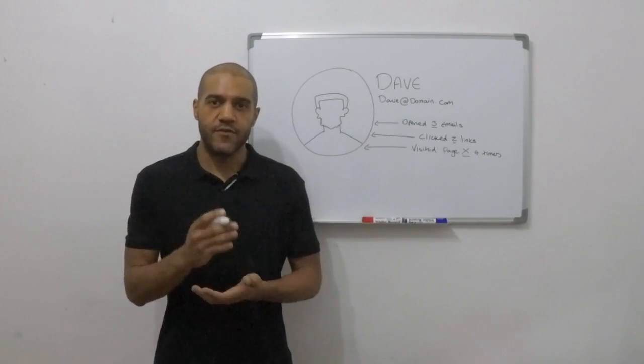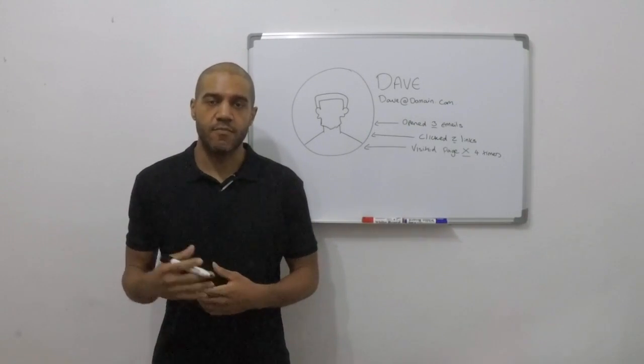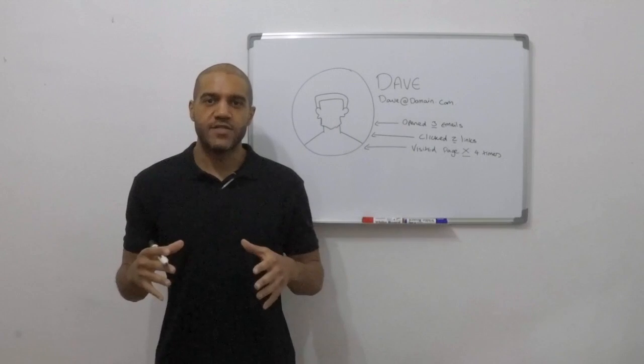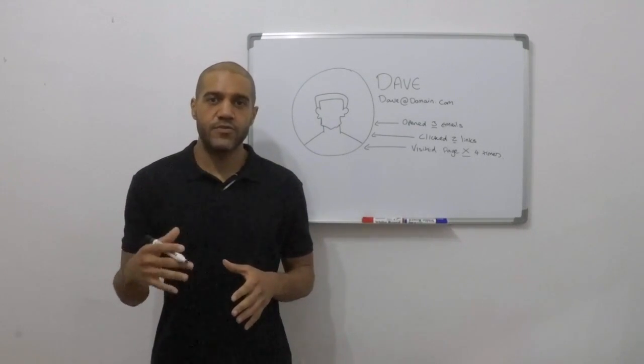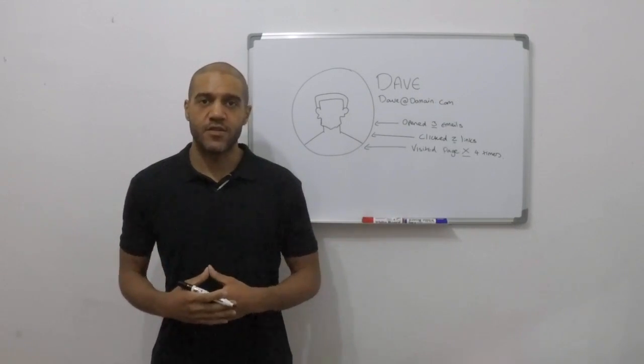Then you've got segments which are like dividers and then tags would act as labels to mark each subscriber. It sounds a bit complicated now but once you're up to speed on how your particular system does this, it'll make sense in no time.